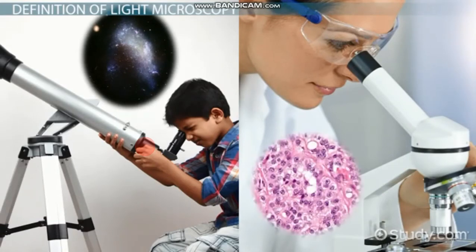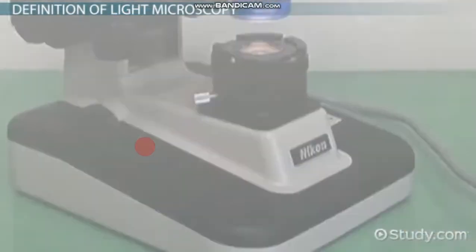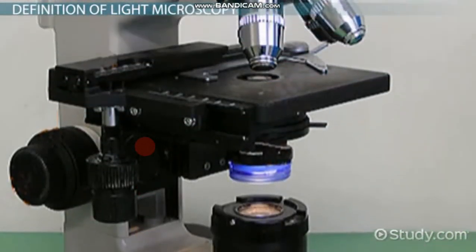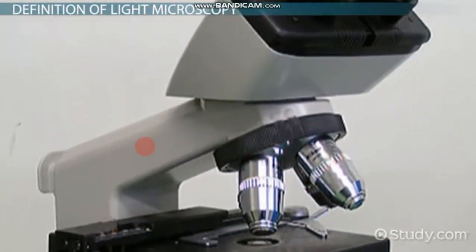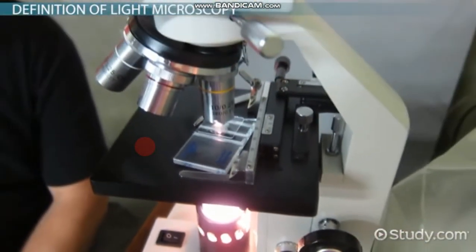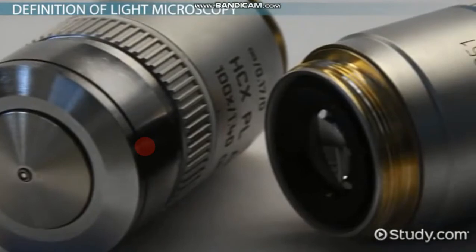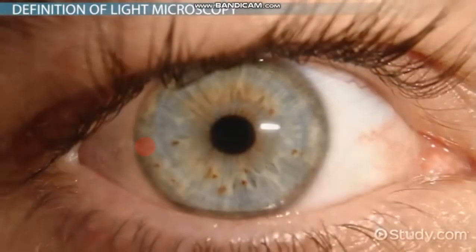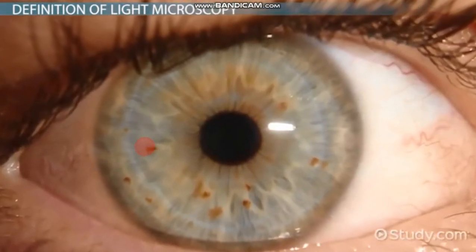Light microscopes send light through a path that first focuses the light into a tight beam and then passes that light through a sample, which creates an image. That image then passes through one or more lenses to magnify it until it reaches the user's eye or a camera.